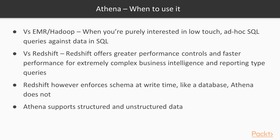Versus Redshift, the waters are muddied a little. Redshift is somewhere between Athena and a database — it offers much greater performance controls. You can create things like temporary tables, control the size of your cluster and the type of nodes you're using. It tends to be faster for extremely complex business intelligence and reporting queries — things with lots of inner and outer joins, sub-queries, and large amounts of aggregations. However, Redshift enforces a schema at write time, just like a database, whereas Athena does not. Athena also supports both structured and unstructured data.